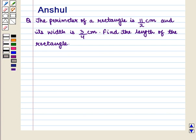Hello and welcome to the session. In this session we are going to discuss the following question: The perimeter of a rectangle is 11/2 cm and its width is 3/4 cm. Find the length of the rectangle.